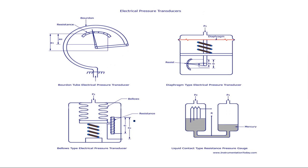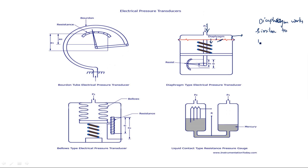There are other types of electrical pressure transducers that work with sensing elements. The first is a Bourdon tube electrical pressure transducer, the second is a diaphragm type electrical pressure transducer, and the third is a bellow type electrical pressure transducer. In the second diagram, pressure P1 is applied through the diaphragm. The diaphragm has a property to bend based on the pressure applied, similar to the diaphragm type we have seen.